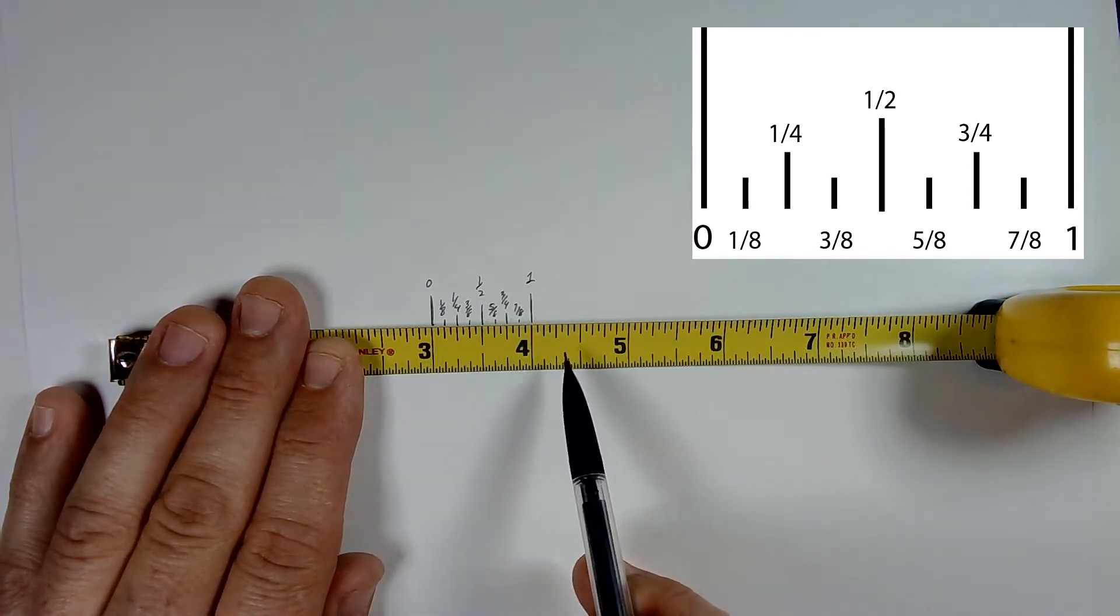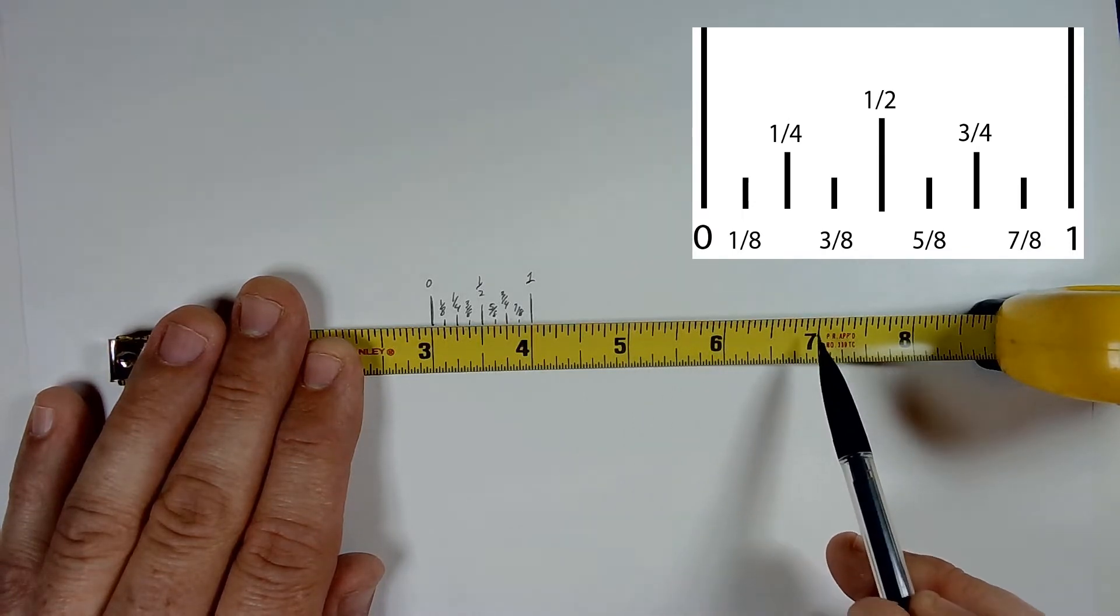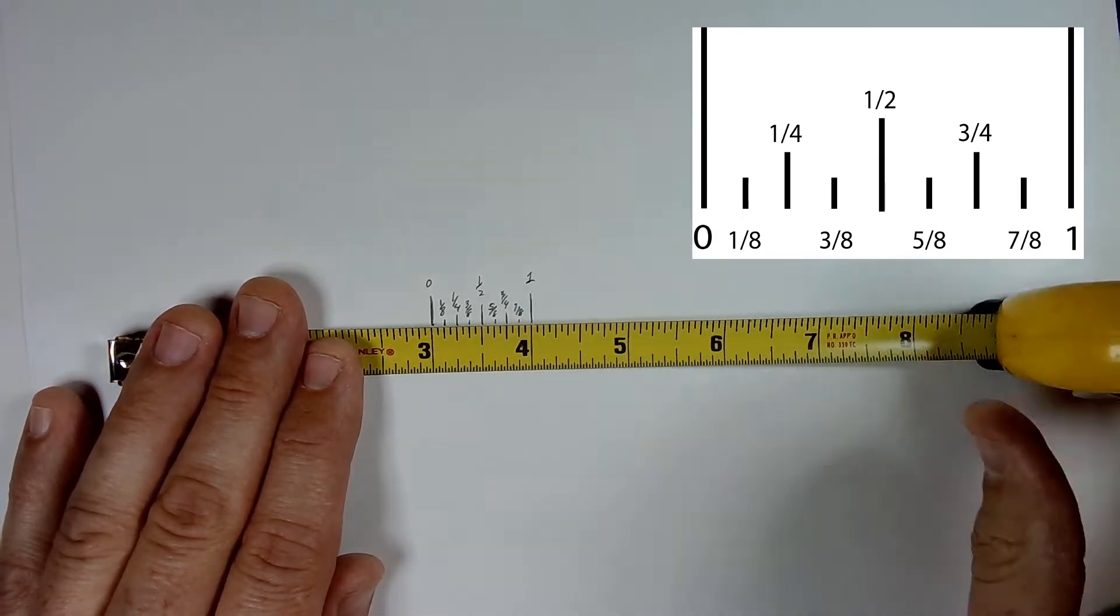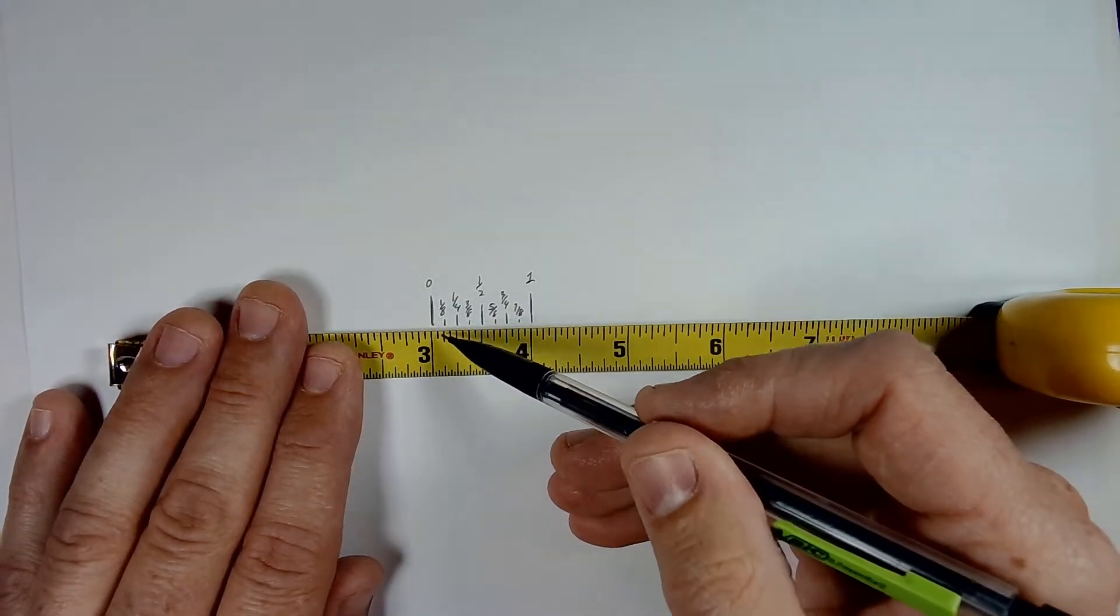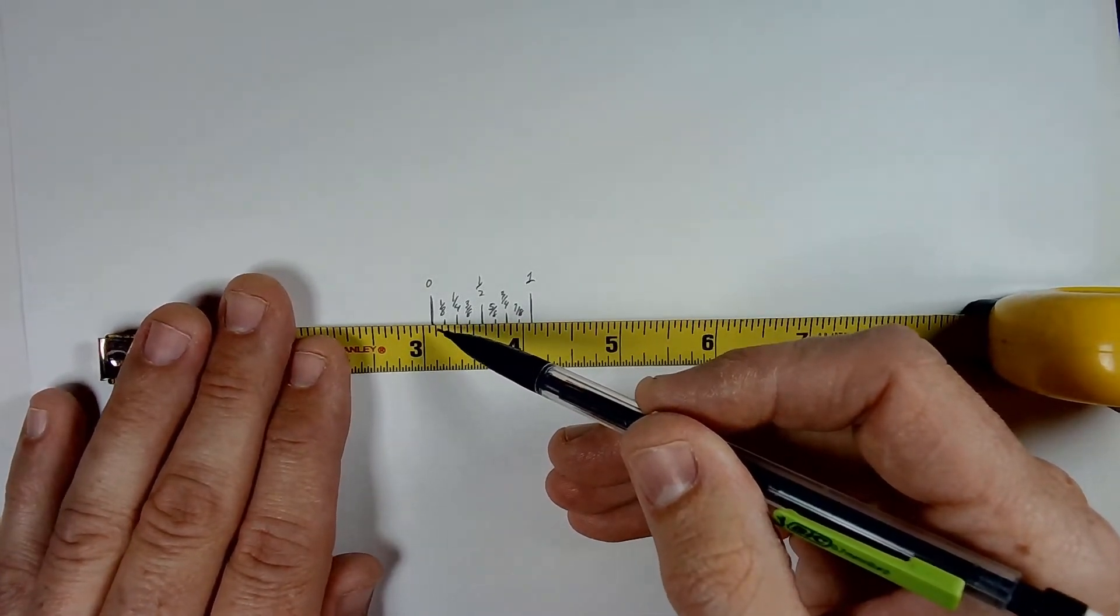This repeats at every inch mark so that you can take measurements down to an accuracy of basically a sixteenth of an inch on this particular tape measure.